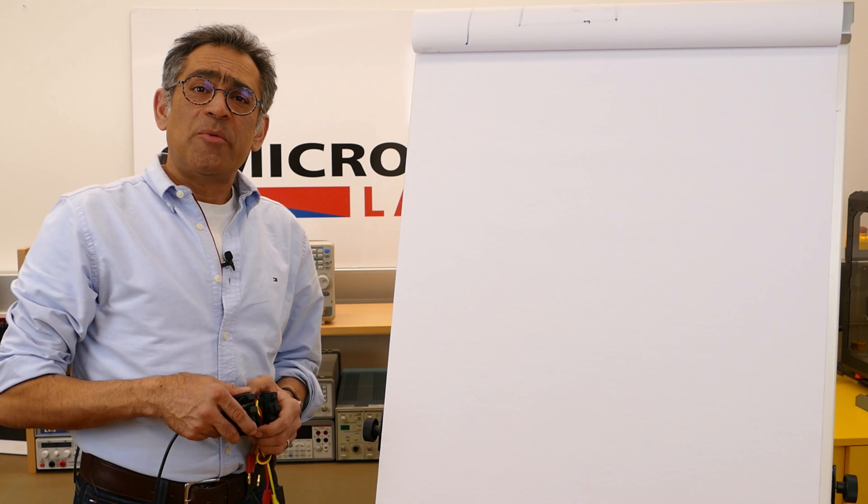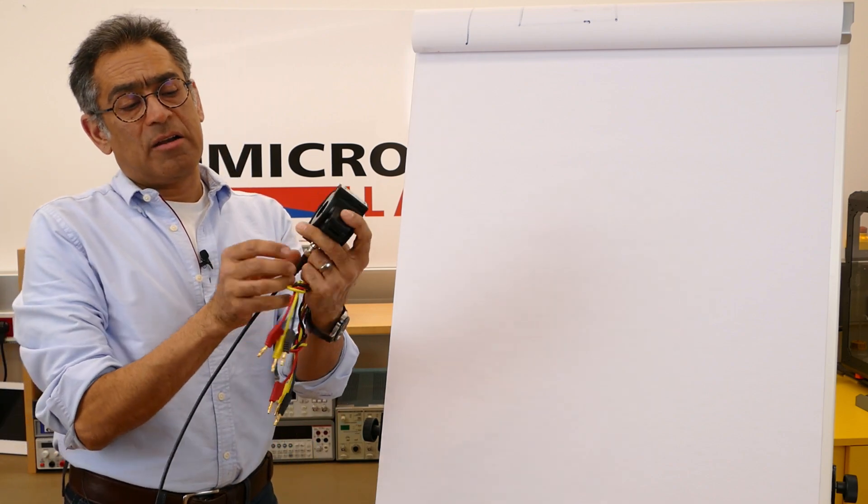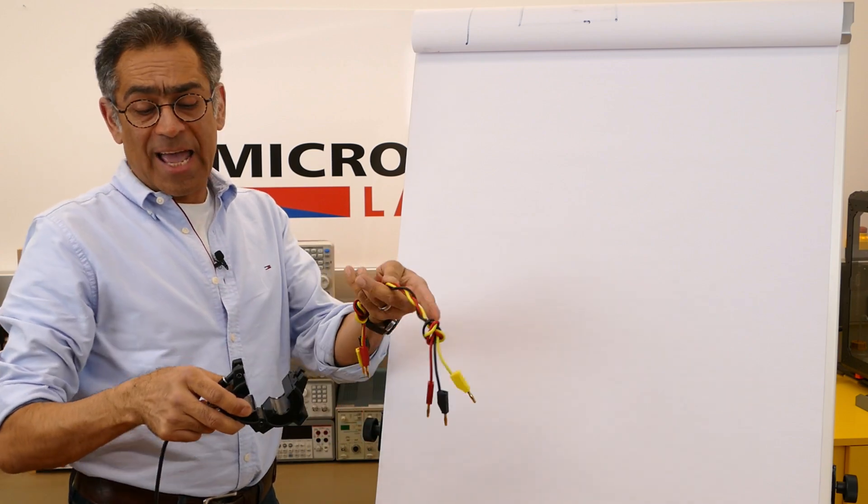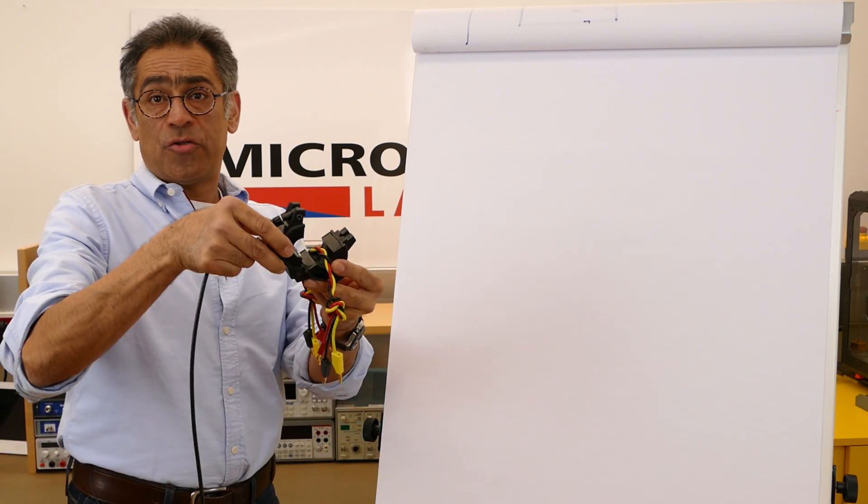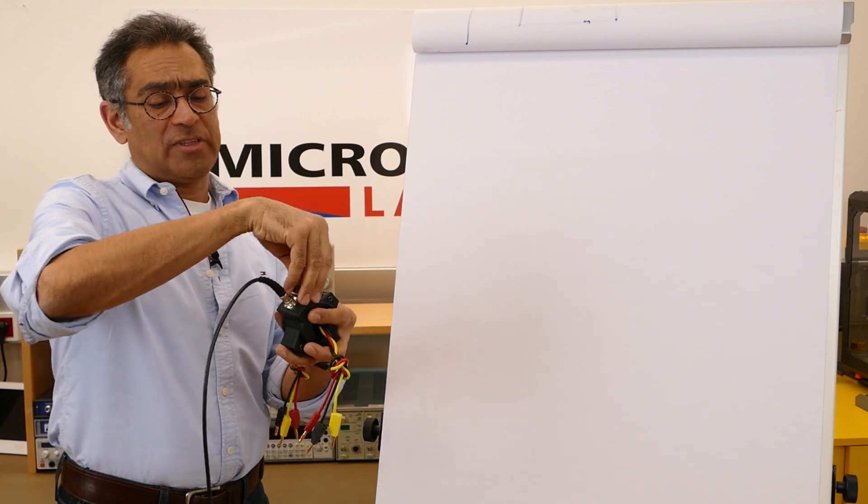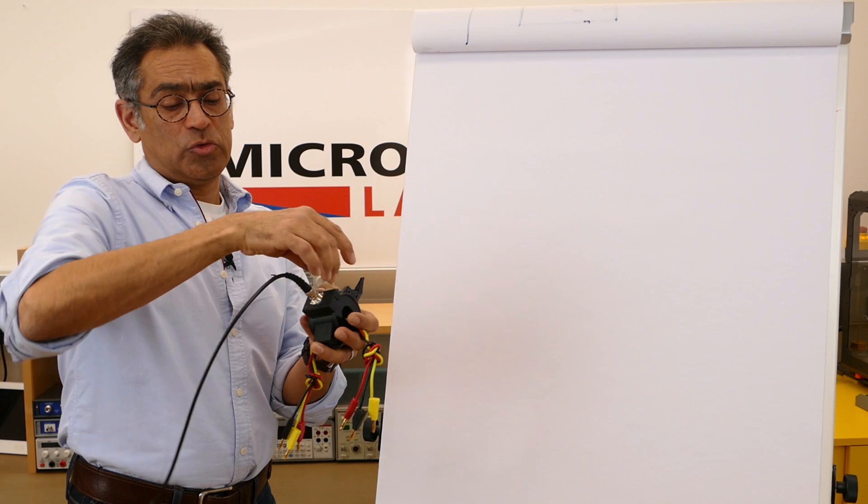So if you remember from our previous video, you get an EMC current clamp which looks something like this, and then you put the cables of your device under test through the clamp, and then the output of the clamp will go to the spectrum analyzer.